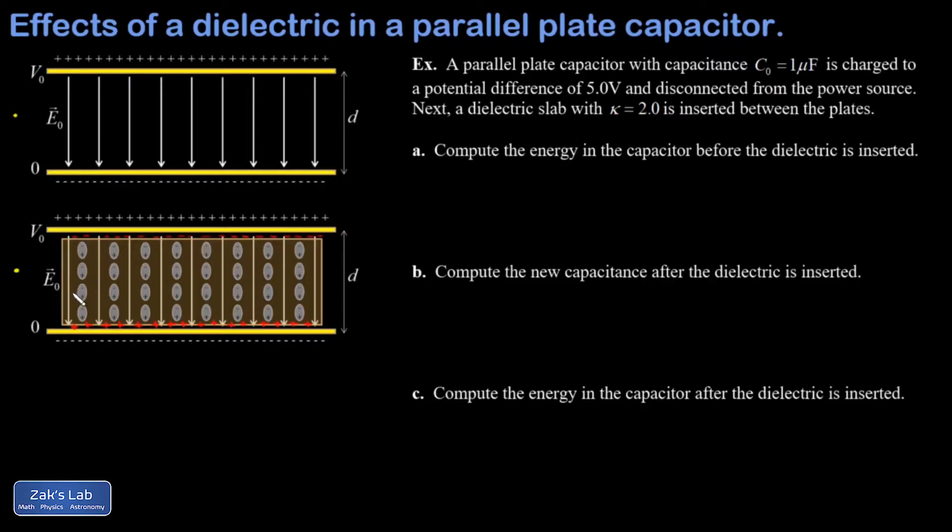So I end up with a small induced electric field pointing upward. So this small induced electric field partially cancels the original electric field, and that's where we begin getting into the mathematics here. I'm going to say that my new electric field is equal to the original divided by some constant, and traditionally we use a kappa for that.